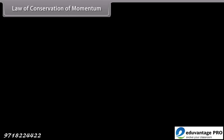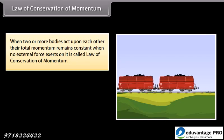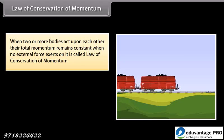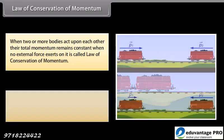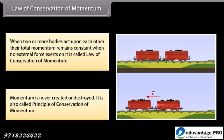Law of conservation of momentum. When two or more bodies act upon each other, their total momentum remains constant when no external force exerts on it. This is called law of conservation of momentum. Momentum is never created or destroyed. It is also called principle of conservation of momentum.